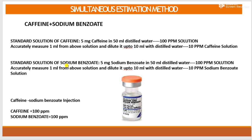Next is the standard solution of sodium benzoate. For that, 5 mg of sodium benzoate is weighed and dissolved in 50 ml of distilled water to get a 100 ppm solution containing sodium benzoate. From this solution, 1 ml is taken and diluted 10 times, that is up to 10 ml with distilled water, to get 10 ppm sodium benzoate.